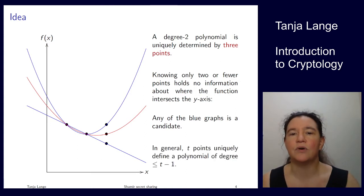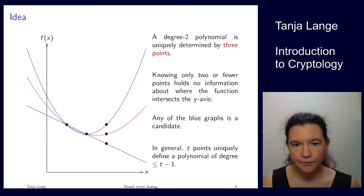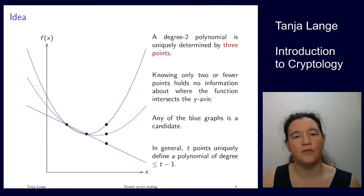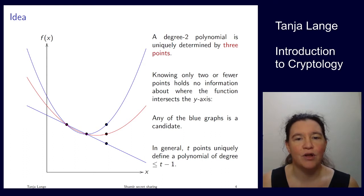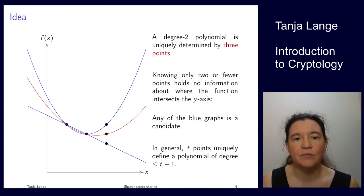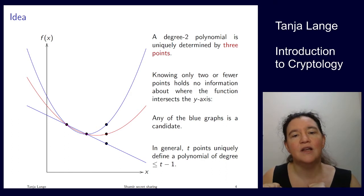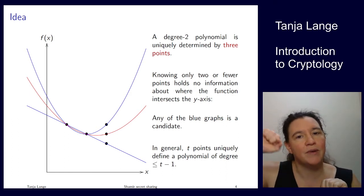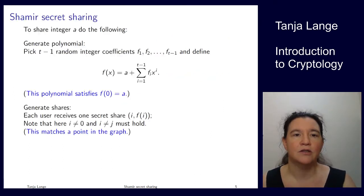In general, if you have t points, you can uniquely define a polynomial of degree t minus one. With fewer points, there is always uncertainty about where the intersection is. Even if the polynomial happens to be of lower degree, not knowing that means you have no information about where the intersection is — and that is the background of Shamir's secret sharing.